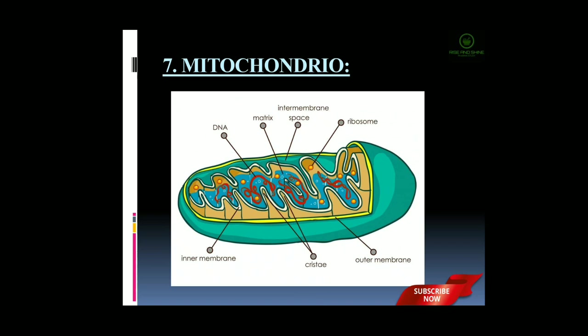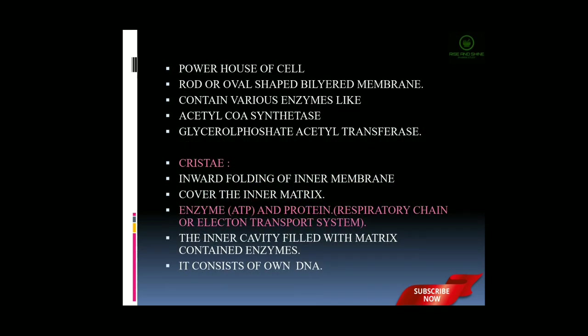Next part of the cytoplasm is the mitochondria. Mitochondria is the powerhouse of the cell. Here I have given the detailed structure of the mitochondria along with its parts. Mitochondria are rod or oval in shape and consist of a bilayered membrane. They consist of various enzymes like acetyl-CoA synthetase and glyceryl-phosphate acetyltransferase. An important part within them is known as the cristae — an inward folding of the inner membrane which covers the entire inner matrix of the mitochondria. This mitochondria consists of varieties of enzymes including ATP and also some protein, in a system also known as the respiratory chain system or electron transport system.